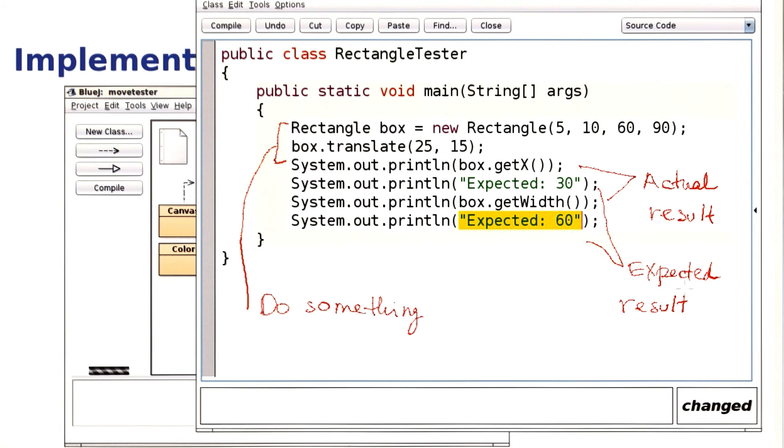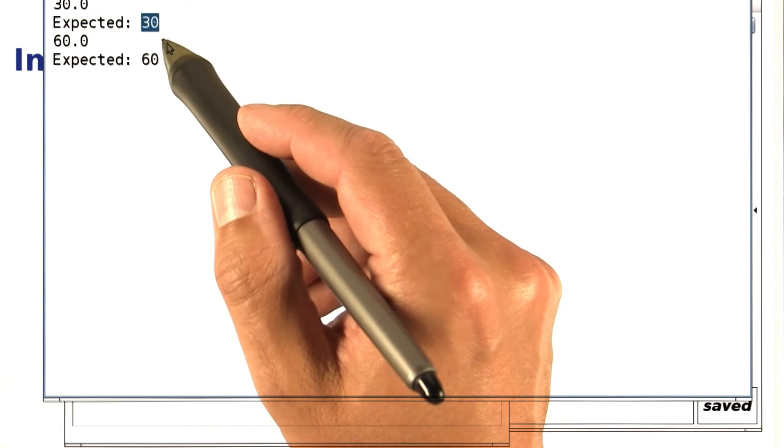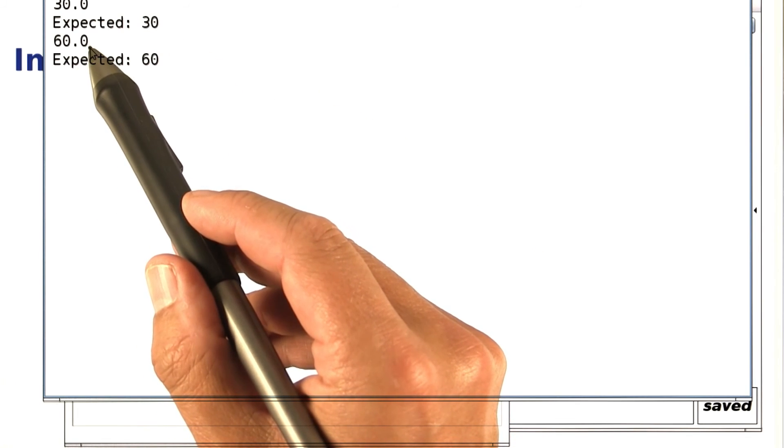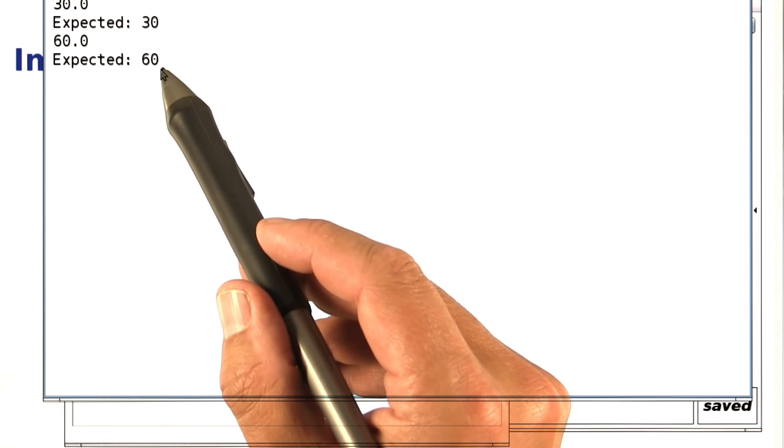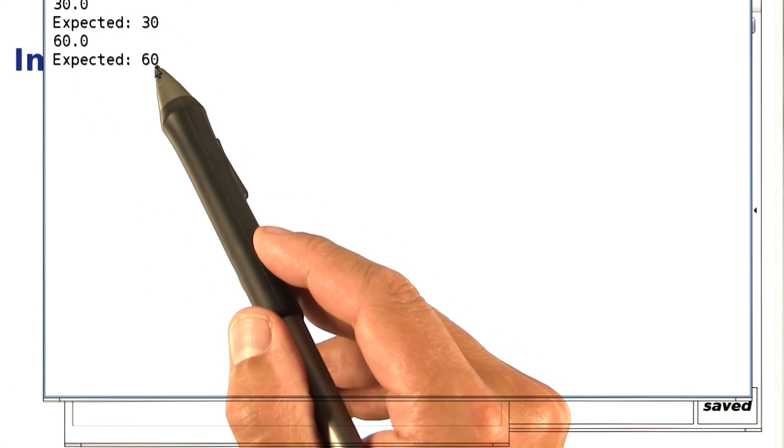Let's quickly run the program. We have the actual x position of 30 and the expected position of 30. And similarly, we have the actual width of 60 and the expected width of 60. So the actual and the expected match up. That's great.